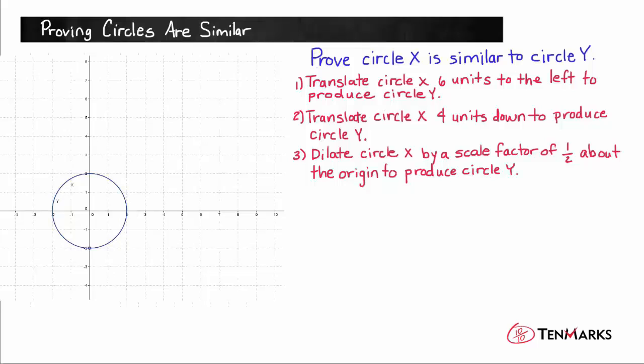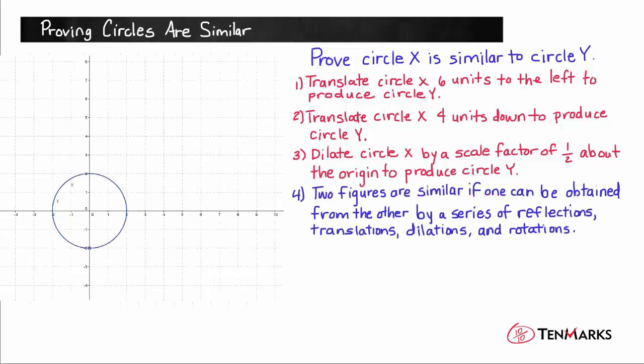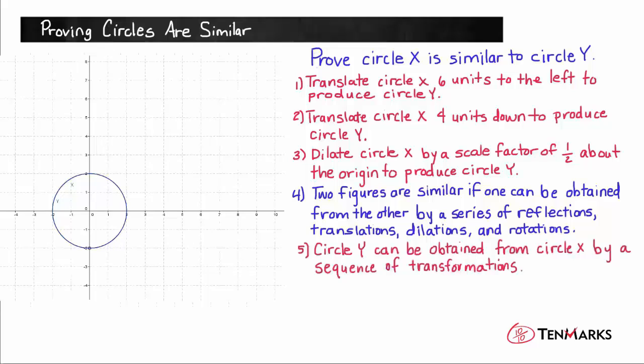So as we said earlier, two figures are similar if one can be obtained from the other by a series of reflections, translations, dilations, and rotations. And since circle Y can be obtained from circle X by a sequence of transformations, circle X is similar to circle Y. Now let's take a look at another one.